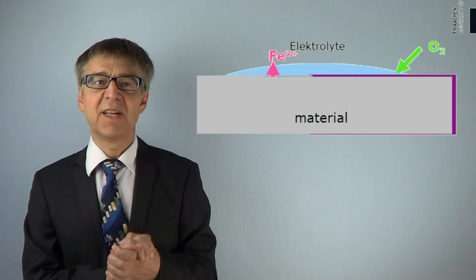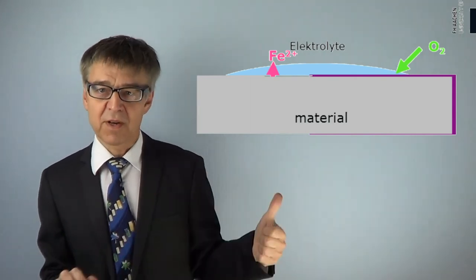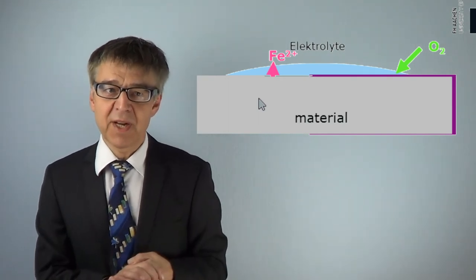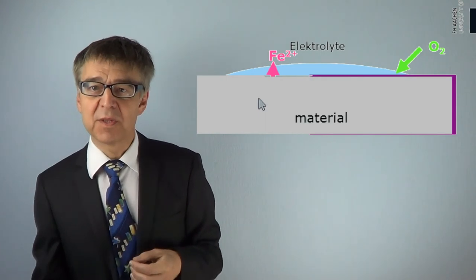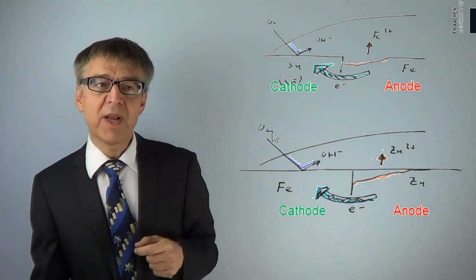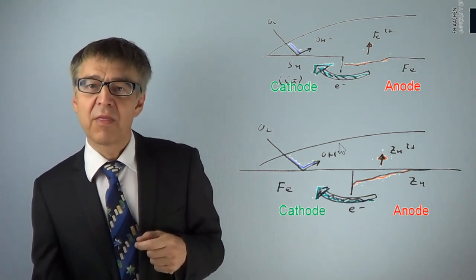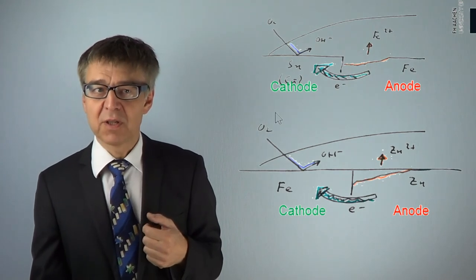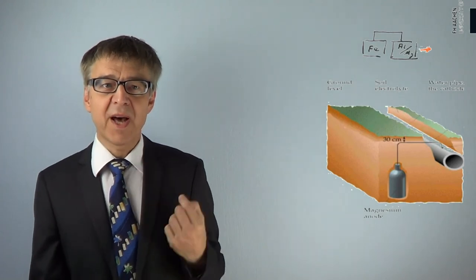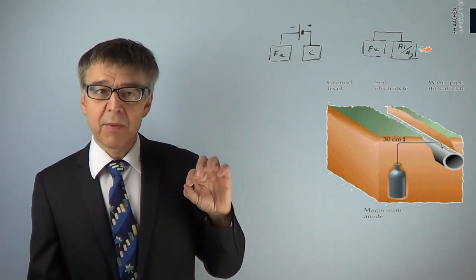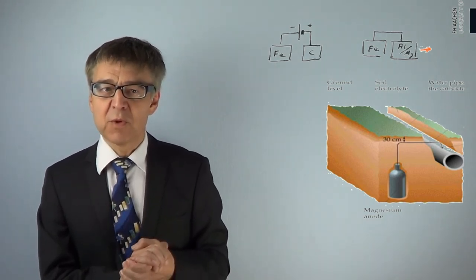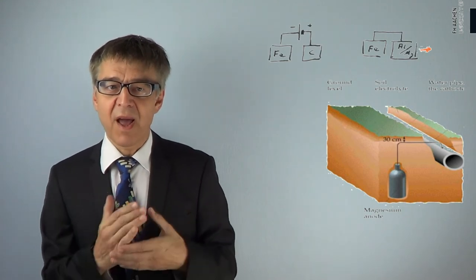Corrosion is facilitated by the following conditions: a lot of oxygen, low pH, high conductivity of the electrolyte, and a large potential difference within the material. With a potential difference in the material, the anode always dissolves while the cathode is protected from corrosion. By using a sacrificial metal or by applying an external voltage, we can make the material a cathode and thus protect it from corrosion. We speak of cathodic protection, or CP.